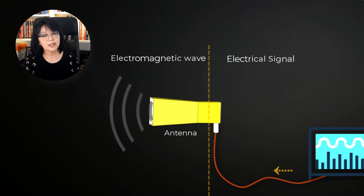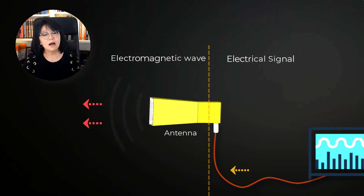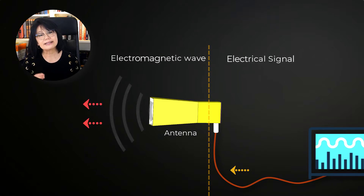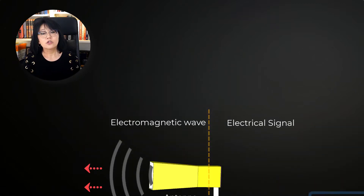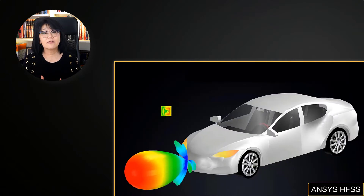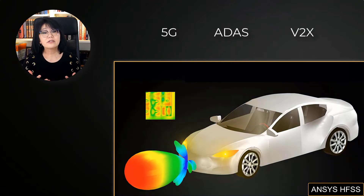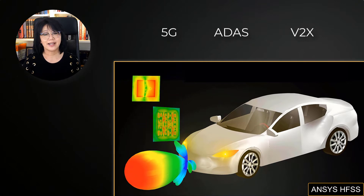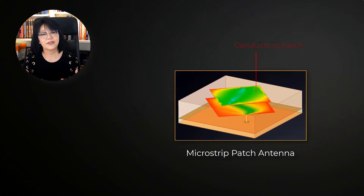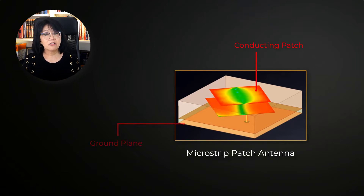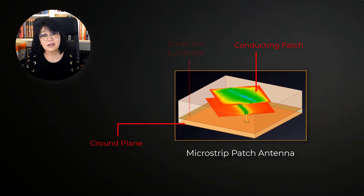Or an antenna can receive an electric signal and radiate it as an electromagnetic wave. Knowledge of how these fields propagate is essential to really understand how to design these antennas. The current antenna configurations for 5G, ADAS, and V2X are commonly configured as an array of microstrip patch antennas. Fundamentally, a microstrip antenna consists of a conducting patch on a ground plane separated by a dielectric substrate.